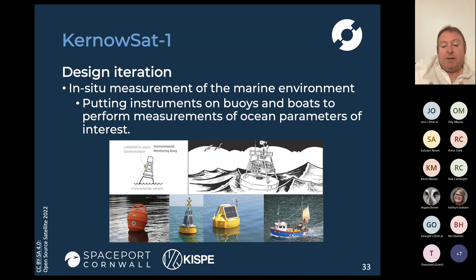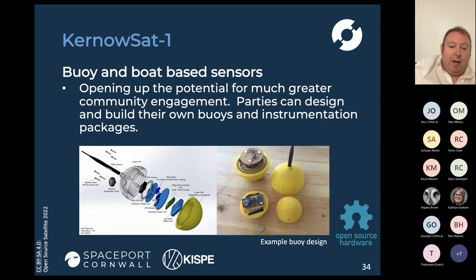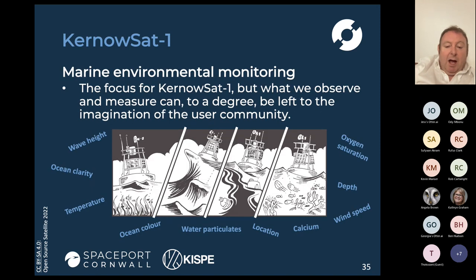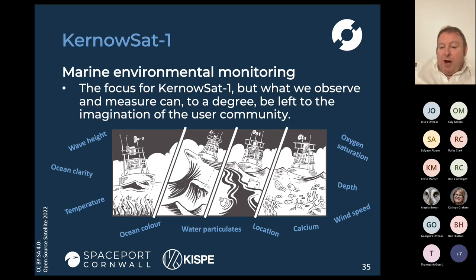What we've done with that design iteration is basically push the measurements of the marine environment from the spacecraft down into the ocean. We're now able to do in-situ measurements by putting instruments on either buoys, boats, or even on the pontoons. That gives us much more freedom in the design of those bits of equipment, but also in the things we're measuring and how we're going about measuring them. Here are a couple of pictures of an example buoy solution that was developed a number of years ago.